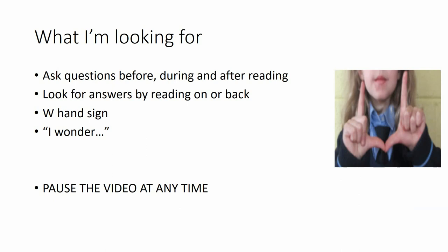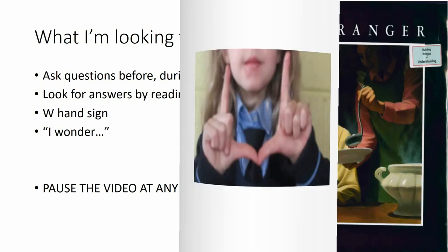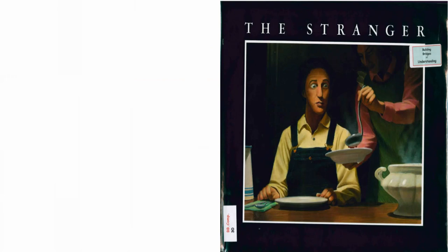Here's what I'm looking for. I want you to ask questions before, during and after our book, The Stranger. I want you to look for answers by reading on or looking back over the story. The hand sign for this skill is making a W with the fingers on your two hands, and we start by saying, 'I wonder.' Now remember, pause the video every time you have a question that you want to share with someone in the room. This is a really cool, mysterious book — it doesn't have any definite answers, but it's full of interesting clues if you pay very close attention. Let's begin.